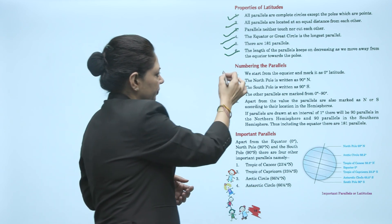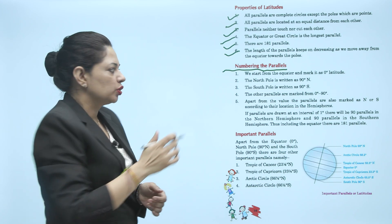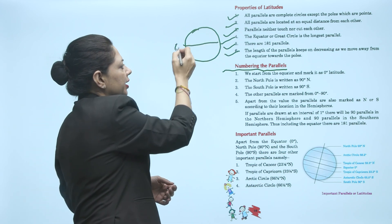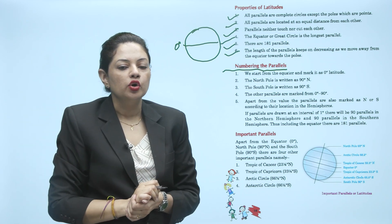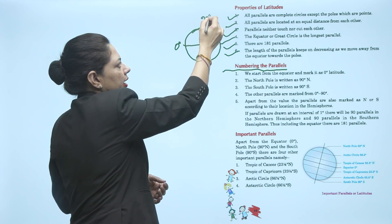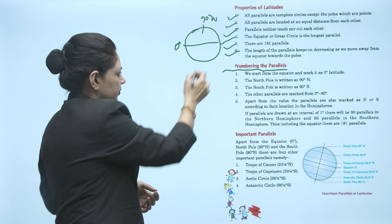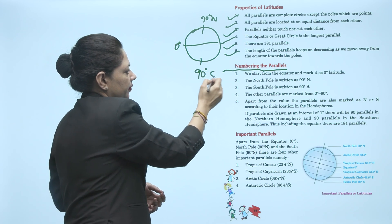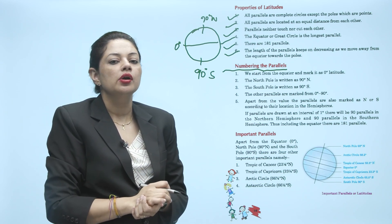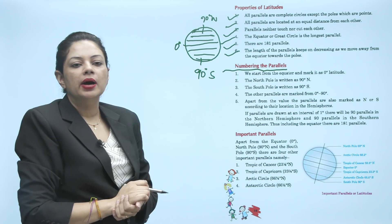Numbering the parallels: We start from the equator and mark it as 0 degree latitude. हम equator से start करेंगे और उसको 0 degree पर mark करेंगे. The north pole is written as 90 degree north, and the south pole is written as 90 degree south. The other parallels are marked from 0 degree to 90 degree — up to 90 degree north and up to 90 degree south.